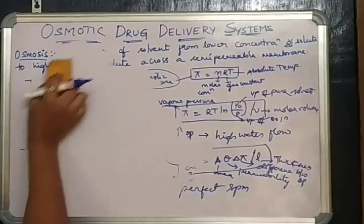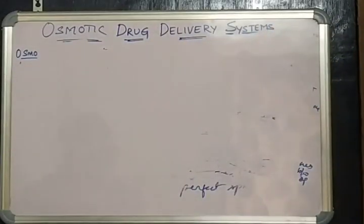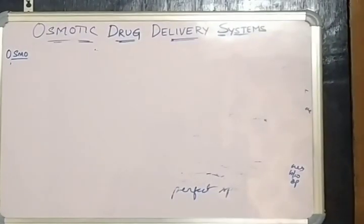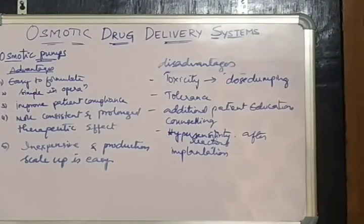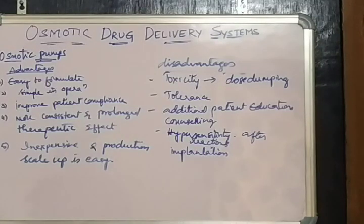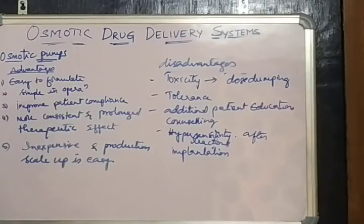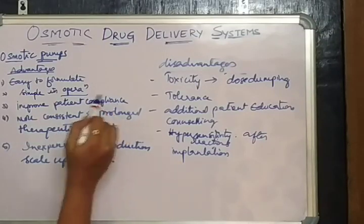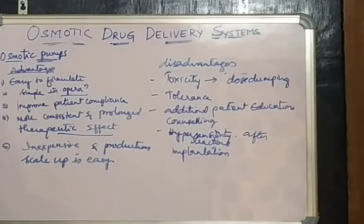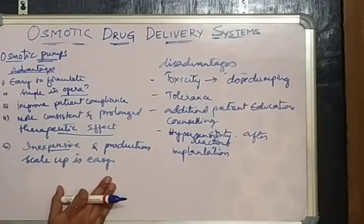Next, osmotic pumps. These osmotic pumps offer several advantages. They offer more advantages than other controlled drug delivery systems. The advantages are: they are easy to formulate, simple in operation, and improve patient compliance with reduced dosing frequencies and more consistent and prolonged therapeutic effect with uniform blood concentrations. These are inexpensive and the production scale-up is easy.